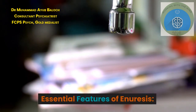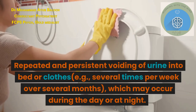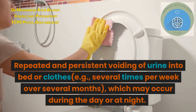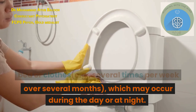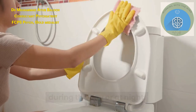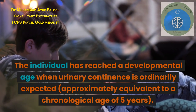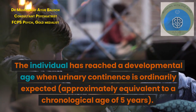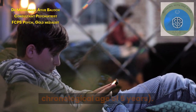Essential features of enuresis: repeated and persistent voiding of urine into bed or clothes, for example several times per week over several months, which may occur during the day or at night. The individual has reached a developmental age when urinary continence is ordinarily expected, approximately equivalent to a chronological age of 5 years.